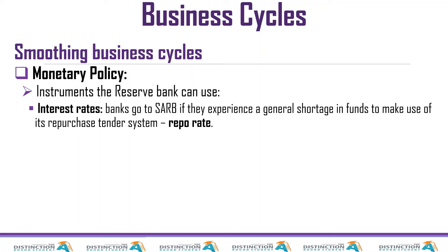The monetary policy instruments: number one is interest rates, which can either be adjusted upwards or downwards depending on what is going on. If commercial banks need money, they borrow from the reserve bank. The reserve bank gives them the money, but those commercial banks have to pay it back with interest — and that interest rate is what we call the repo rate.